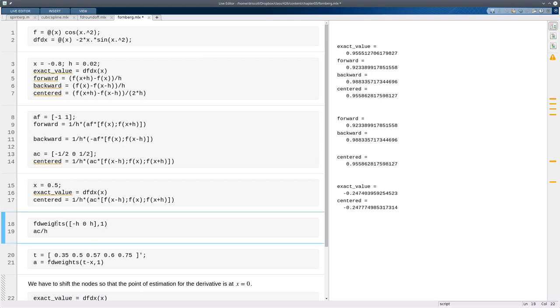Now the book shows a function called fdweights, which will find the weights for you on a given set of points. The one thing to keep in mind when using fdweights is that it always computes the derivative at zero, not at x. So you always have to set your nodes up so that they are relative to zero. So in order to get the centered weights, I put in the three points, minus h, zero, and h, and I ask for a formula on the first derivative. And that's the same as the centered formula divided by h.